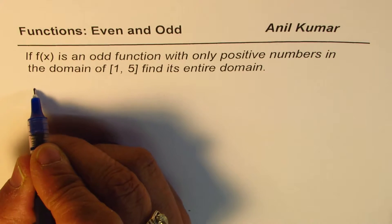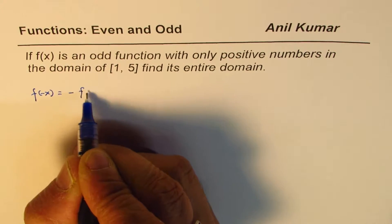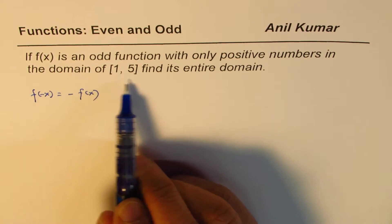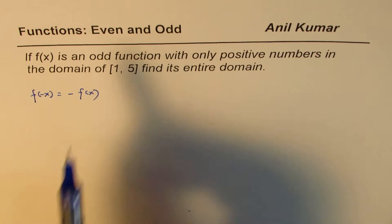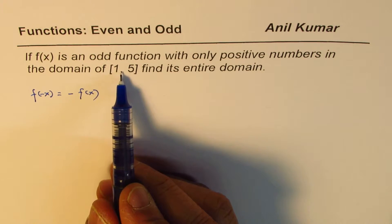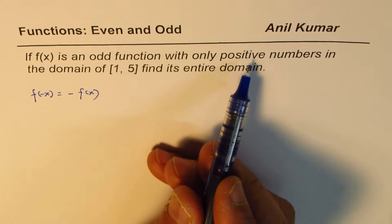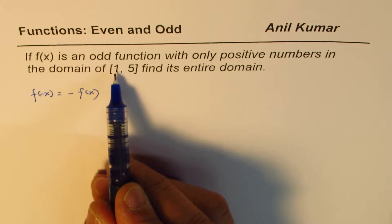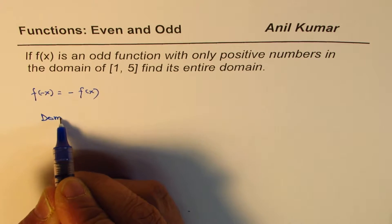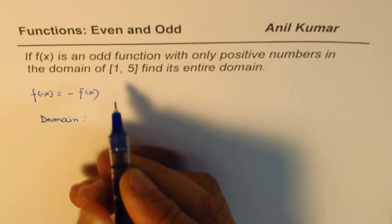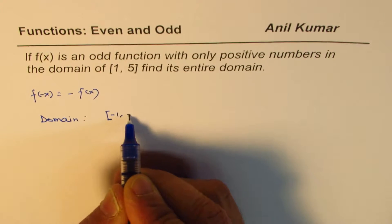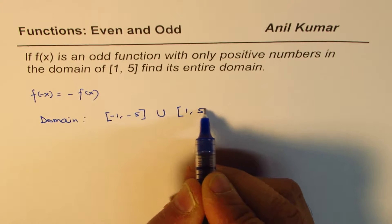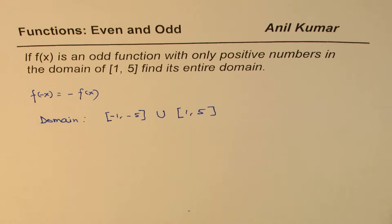For an odd function, we have f of minus x equals minus f of x. If we have only positive numbers in the domain from 1 to 5, that really means if I reflect this about the origin, I should get the negative values corresponding to those. Reflecting means those x values become negative, so the domain will be the union of the given domain and its reflection: from 1 to 5 union minus 5 to minus 1.